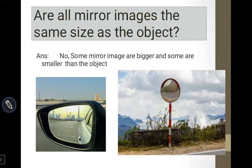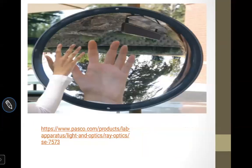You have a question: are all mirror images the same size as the object? No, some mirror images are bigger and some are smaller than the objects. Here we have a convex mirror — a blind corner street mirror — which gives a small image so that you can see a wider view. A carving mirror is also a smaller view. Then some mirrors show bigger images. This is a large view of the hand — so this is a concave mirror.